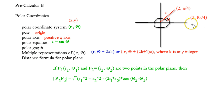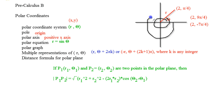If I subtracted 2π from the original, that would be (2, π/4 − 2π), which is going to be (2, −7π/4). That one would be going in the other direction — going almost negative 2π and getting back to the same spot.